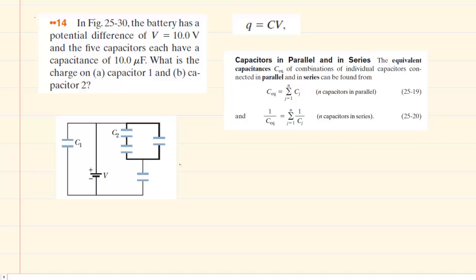To determine the charge on capacitor 1 and capacitor 2, what we have to do is simplify this circuit until we have just a single capacitor. We can begin to do that by noting that these two capacitors right here are in series. When capacitors are in series, in order to get the equivalent capacitance, we follow this equation: 1 over the equivalent capacitance is equal to the sum of the reciprocal capacitances.